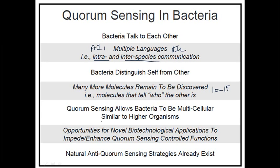Quorum sensing allows bacteria to behave as multicellular organisms, similar to higher organisms. In higher organisms, cells communicate via endocrine signaling, paracrine signaling, or synaptic signaling. In quorum sensing, one bacteria can interact with another bacteria to finally form a colony — what we call a biofilm — with the help of quorum sensing techniques.